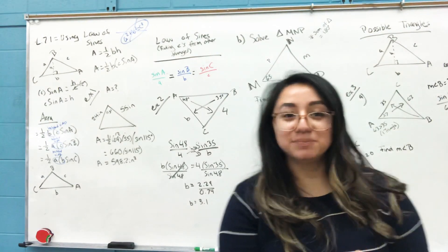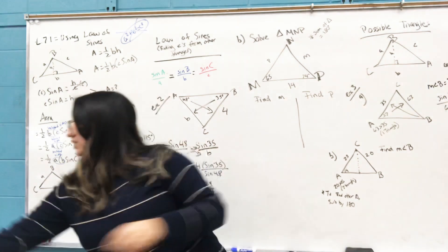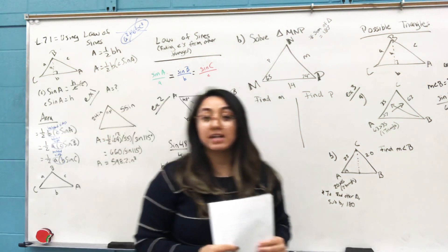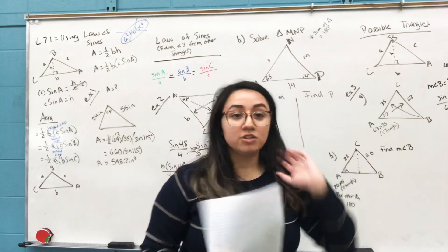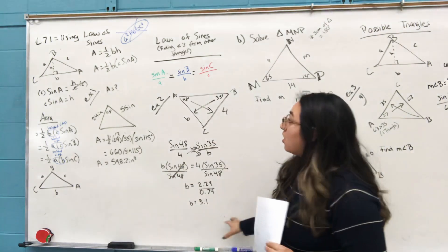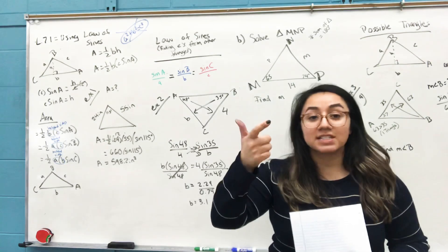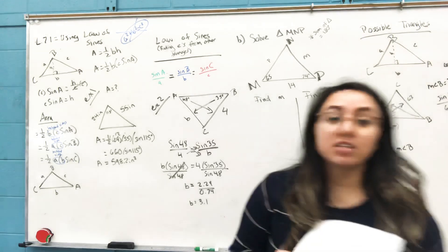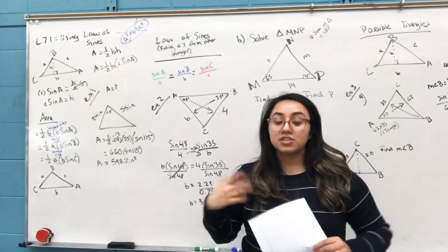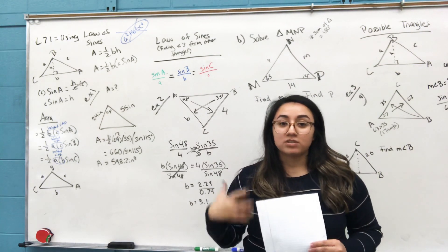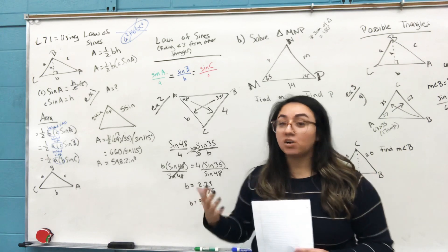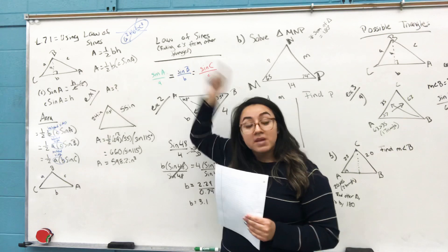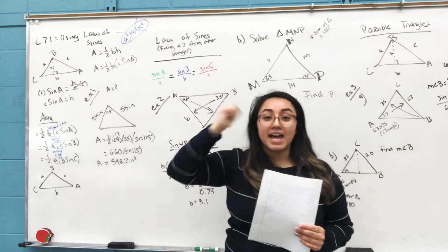Hello, welcome to Algebra 2. Go ahead and open your books to lesson 71, page 506. We are learning a new trig lesson — this pertains to finding angles inside when you're not dealing with the usual right triangle. There's a certain method you have to use when solving for the sides and angles, so you can't always rely on a² + b² = c². I have that crossed out — keep that in your brain: you can't use that for this lesson or the homework.